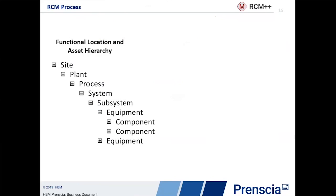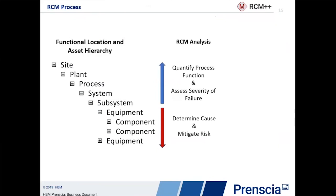From the point of view of our RCM analysis, we talked about doing this functional analysis first, and only in the situation that we identify it as being critical do we actually look a little bit deeper. This helps simplify the overall process and reduce the amount of time taken in RCM analysis. Only when I determine that there are actually critical failures do I delve deeper into the component level to look at causes, effects, and mitigate those risks where you're going to spend a lot more time in your analysis.